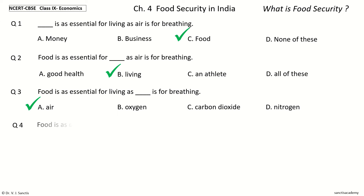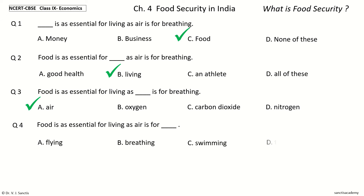Question 4: Food is as essential for living as air is for dash. The options are: flying, breathing, swimming, the atmosphere. Your time to choose. And the answer is breathing. So food is as essential for living as air is for breathing.